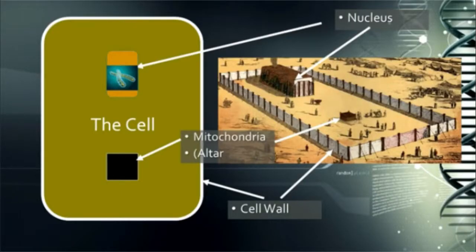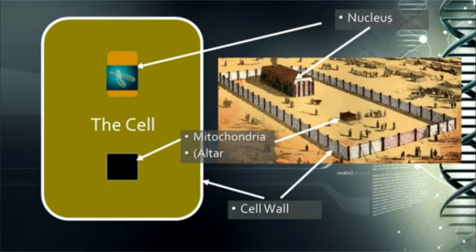Here's a comparison. You have the courtyard with a curtain that surrounds it — that is the cell wall or the cell membrane. You have an altar where they brought sacrifices, laid them on that altar and burnt them — that corresponds to the mitochondria in the cell. And then you have something that every cell needs, and that is a nucleus — corresponding to the heart of the tabernacle structure itself, which is the sanctuary and the most holy place.